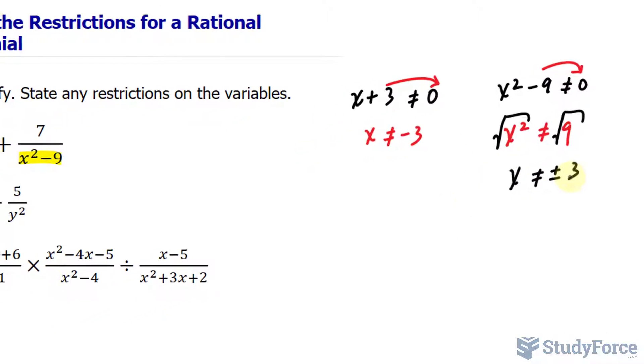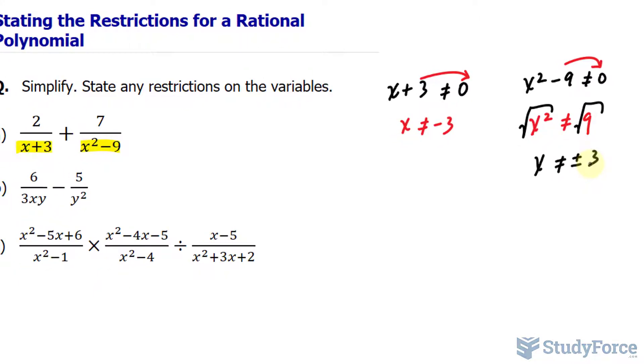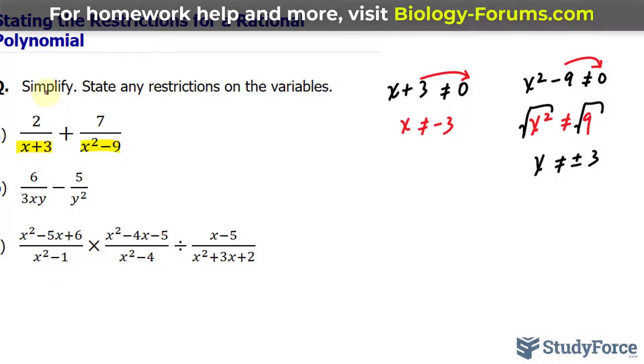So far, before we have even simplified, we know that the restrictions are negative 3 and positive 3. But there may be more restrictions as you simplify this expression.